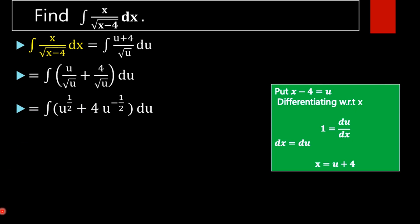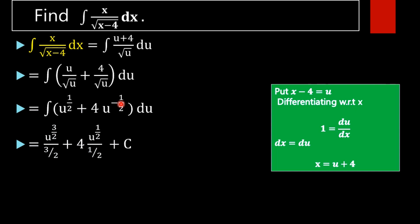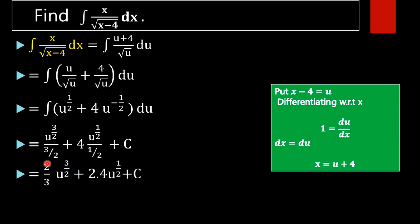Now on integrating, we will get u raised to half plus 1 divided by half plus 1, that is u raised to 3 by 2 divided by 3 by 2, plus 4 into u raised to minus half plus 1 divided by minus half plus 1, plus c. That is, u raised to 3 by 2 divided by 3 by 2 plus 4 into u raised to half by half plus c. Taking reciprocal, we get 2 by 3 into u raised to 3 by 2 plus 2 into 4 into u raised to half plus c.